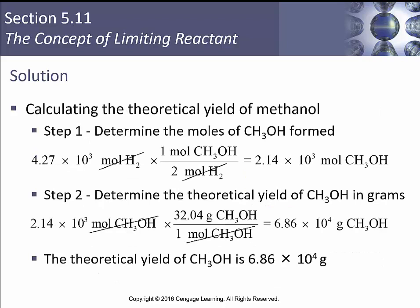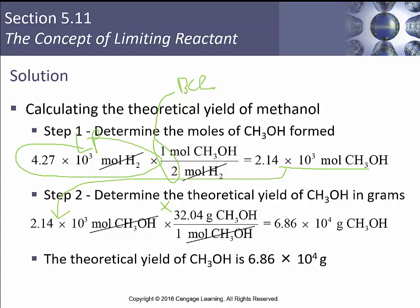We figure out the number of moles of methanol produced by taking our moles of hydrogen — our limiting reactant — and applying the balanced equation's 1-to-2 ratio, giving us 2.14 × 10³ moles of methanol. Then we determine the theoretical yield in grams by multiplying by the molecular weight of methanol: 32.4 g/mol × 2.14 × 10³ mol gives us 6.86 × 10⁴ grams of methanol. So our theoretical yield is approximately 8.64 × 10⁴ grams.